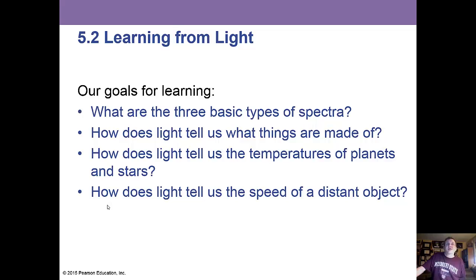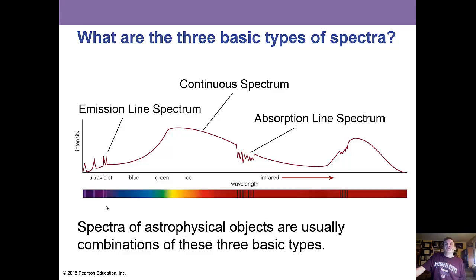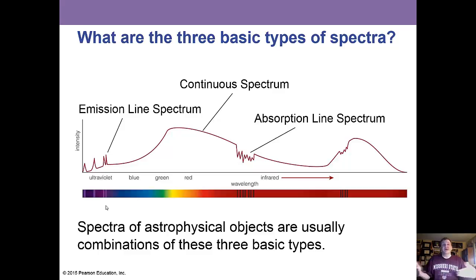Learning from light: what are the three basic types of spectra? How does light tell us what things are made of? How do we tell the temperatures of planets and stars? And how does light tell us the speed of a distant object? A spectrum is when you take white light and break it up into its component colors — the ROY-G-BIV: red, orange, green, yellow, and so on.